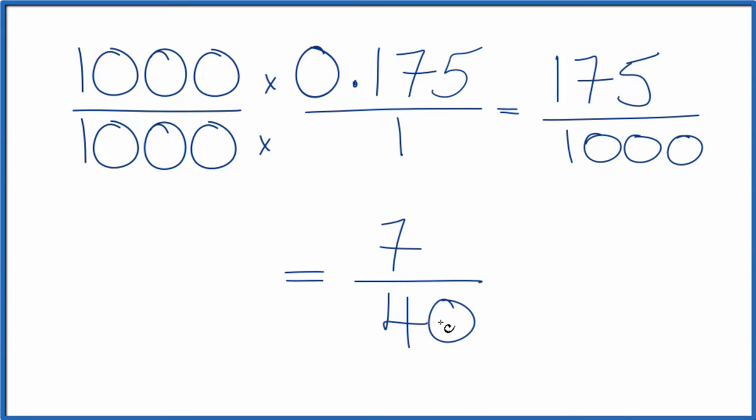If you divide 7 by 40, or 175 by a thousand, you'll get 0.175.